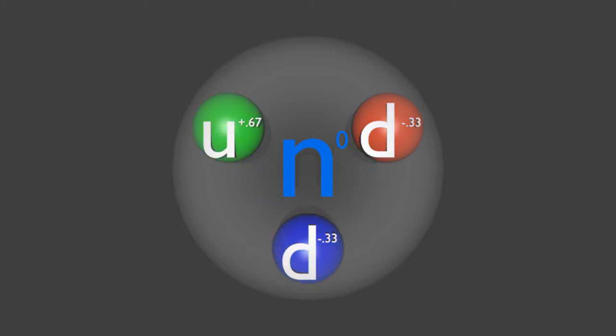The neutron isn't just a simple particle though. It is composed of three smaller particles called quarks. There are different types of quarks. In the neutron there are two downs and one up. The downs each have a charge of minus one third and the up has a charge of plus two thirds making a total of zero.